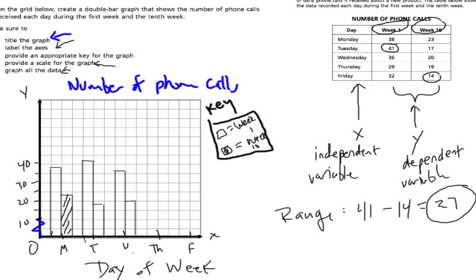Thursday, we have 29 and 19. 29. And close the bar. And 19 down here. Should fix that bar. Right there.